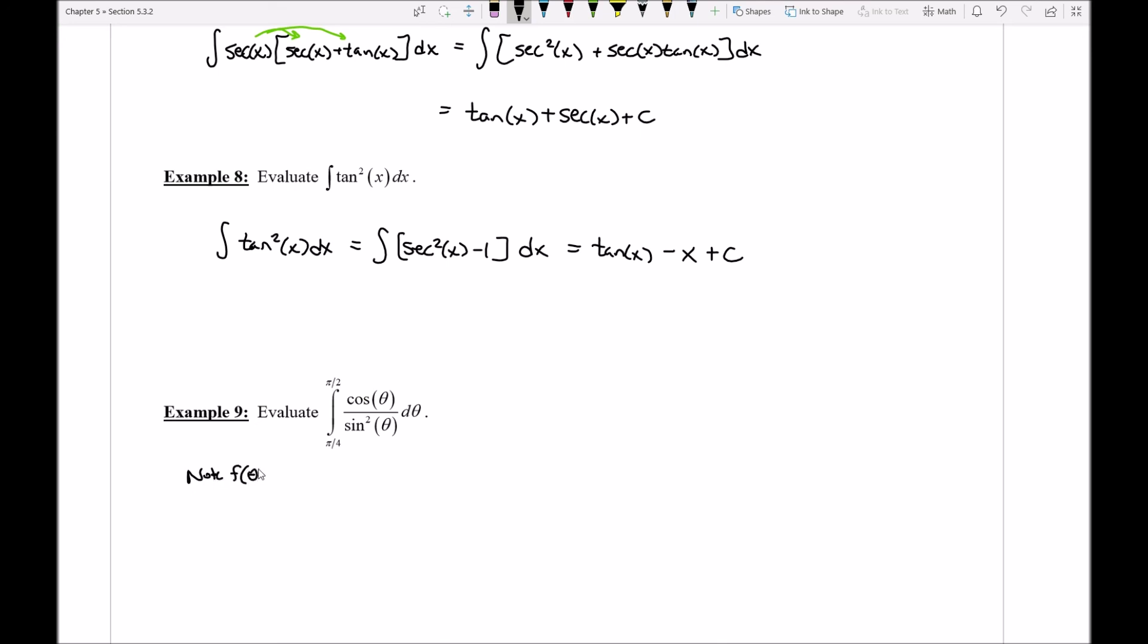Note that I have a function here that's like f of theta. It's the cosine of theta over the sine squared of theta, and my question is, is this continuous from pi over 4 to pi over 2? Well, as long as my sine doesn't ever turn into the value of zero on this interval then I'm okay.